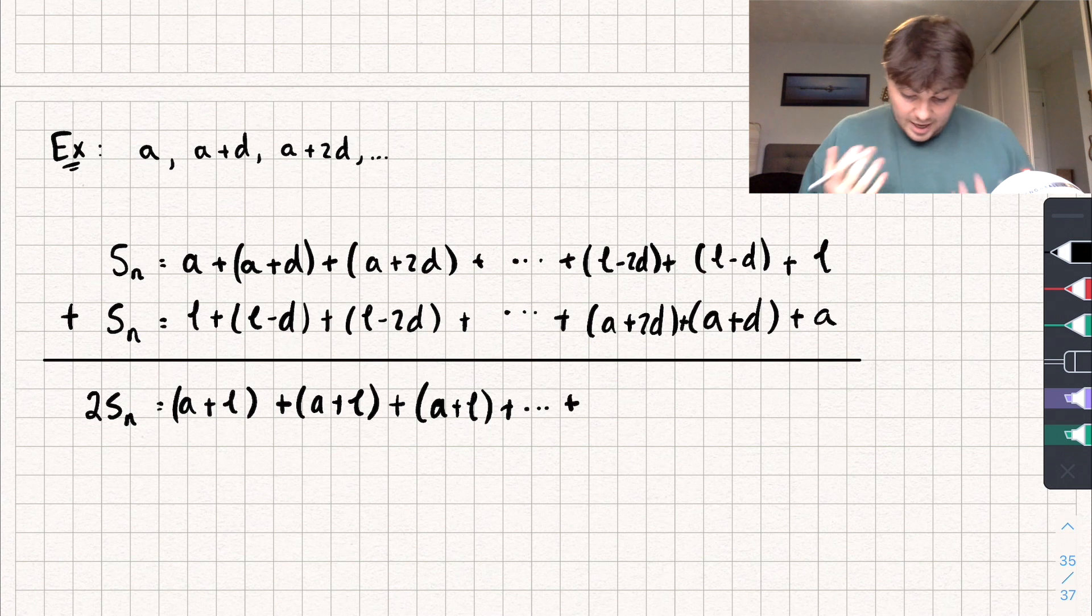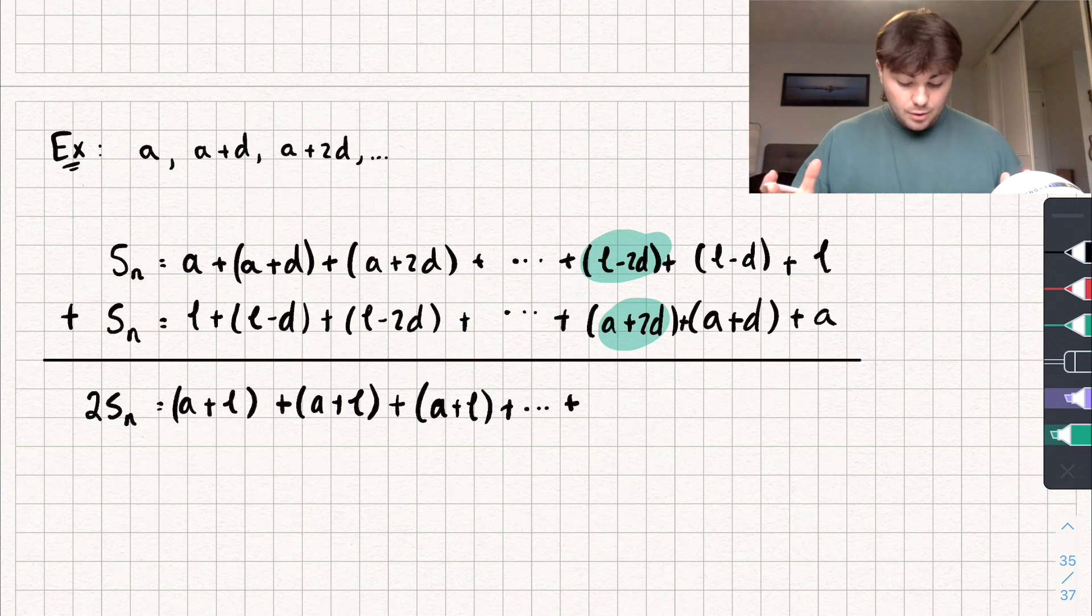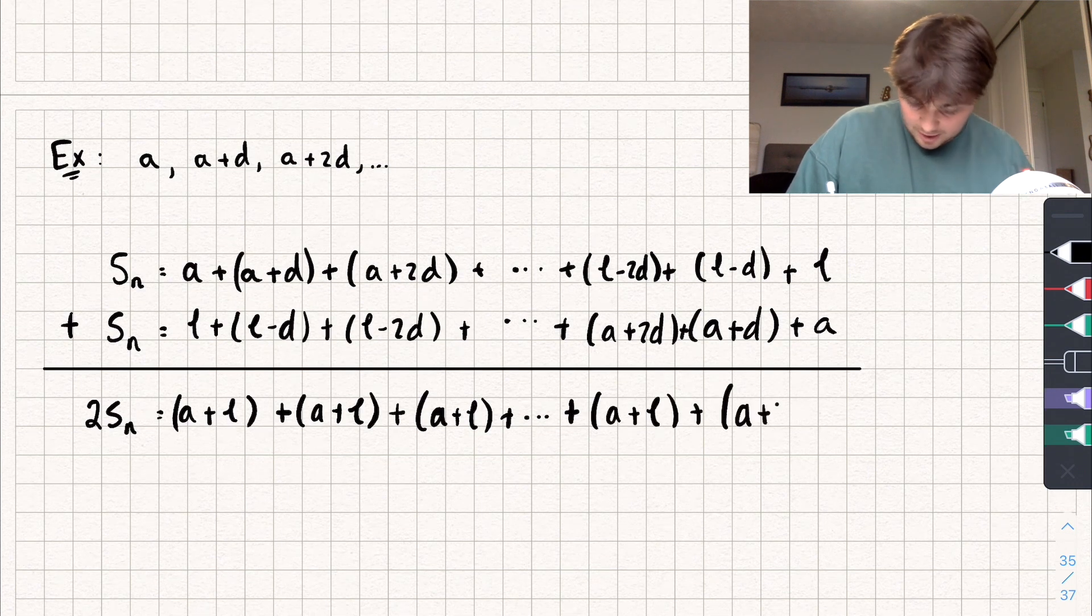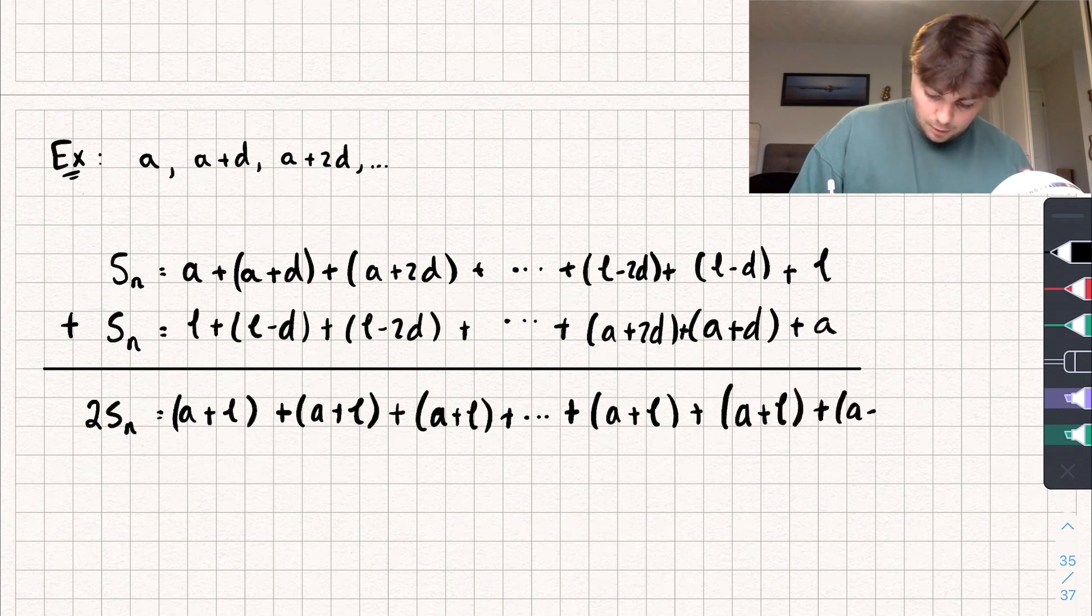And we'll go on towards the end, and the same thing is going to happen here. So we've got L minus 2D plus A plus 2D. You can see the two Ds now are going to cancel out, and we're left with L plus A, or you could write it as A plus L. And finally A plus L.